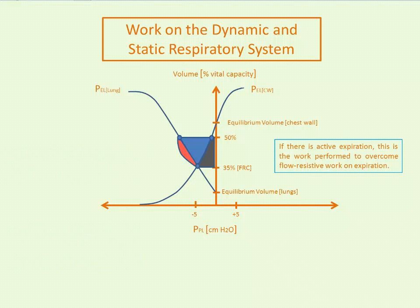In patients having difficulty breathing with increased airways resistance, they may have active rather than passive expiration. Passive expiration is contained within the normal work envelope and requires no additional work. But with active expiration, the pressure-volume curve shifts to the right, and the additional area represents the extra work needed to overcome flow resistance during forced expiration.